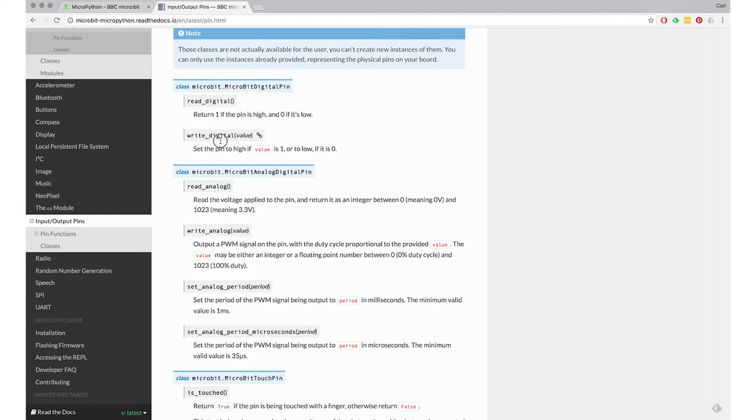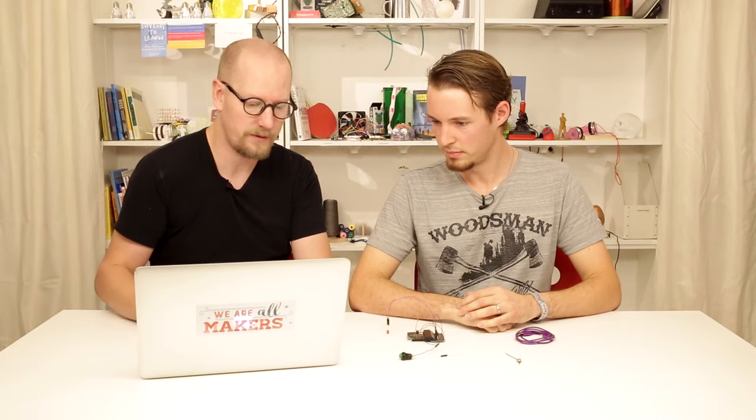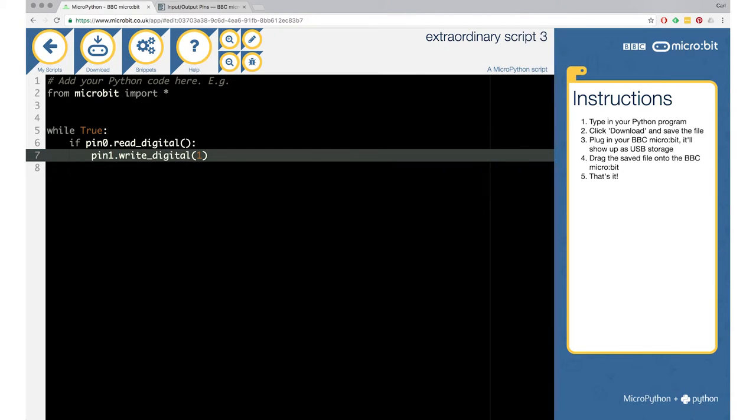I'll go down here and see if I can see some code in the documentation. Here it starts with all the functions. I see read digital that we just used with some explanation, and write digital below there. This seems to be what I need. Here it also says you can set the pin to high by giving it a one, or setting it low with a zero. High means you give it power. I would need to give it a value of one when we press the button, and it should write to pin one because that's the one we connected our LED to.